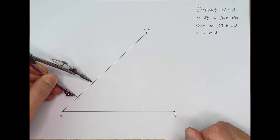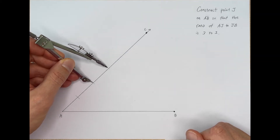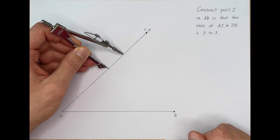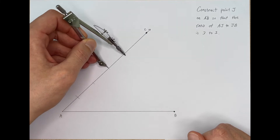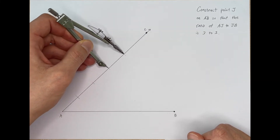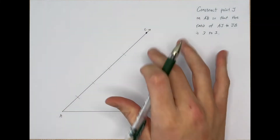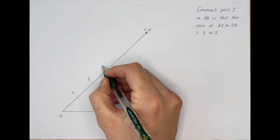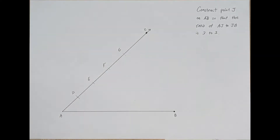There's our second one, our third one, and one more time — there we go. Now we're going to label these. So we have A, and then we'll call the arc points D, E, F, and G.